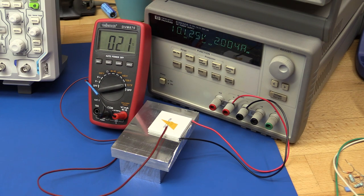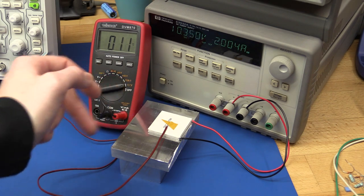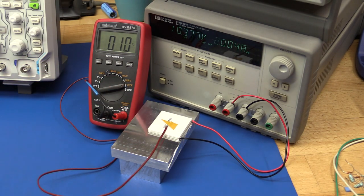And you can see it drops fairly quickly. Of course it doesn't have any mass to cool down, it's just the surface of the element itself. And you can see in under a minute we can get it to below zero degrees Celsius.